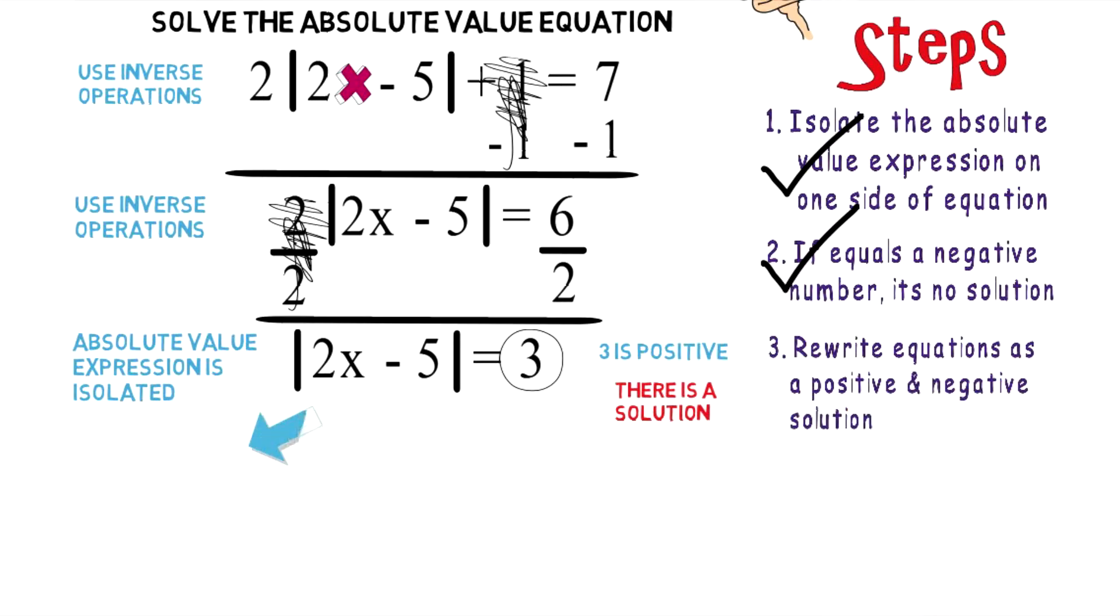So for example, let's separate into a positive solution: 2x - 5 = 3. Let's also separate into a negative solution: 2x - 5 = -3.